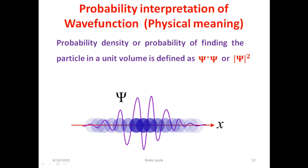Now we look at the physical meaning of the wave function. The wave function at a particular time contains all the information about the particle at that given time, but the wave function itself has no direct physical interpretation. The wave function is a complex function and it cannot be directly measured. However, the product of the complex conjugate of the wave function, psi star, and the wave function psi itself is interpreted as the probability density — the probability of finding the particle in a unit length. It is also written as the square of the modulus of the wave function, |psi|².